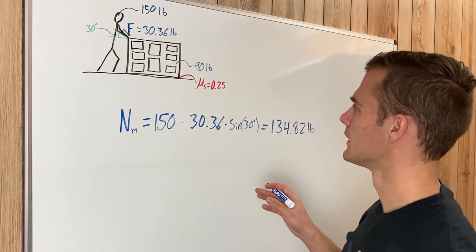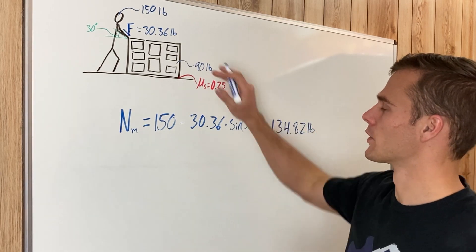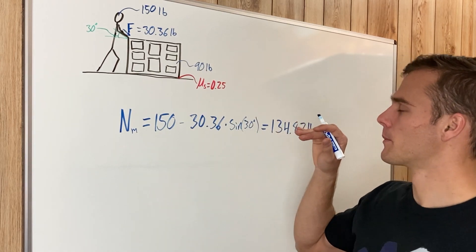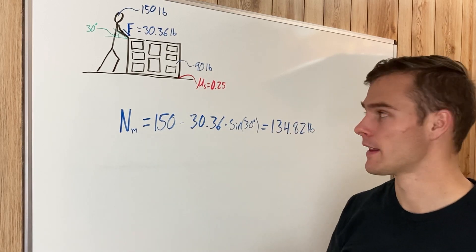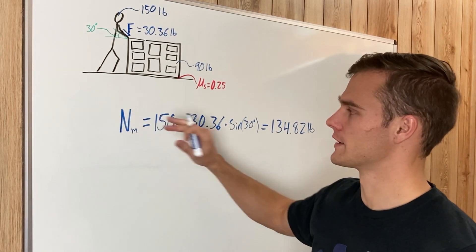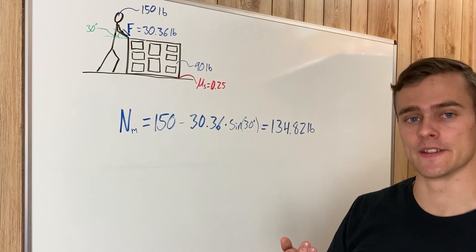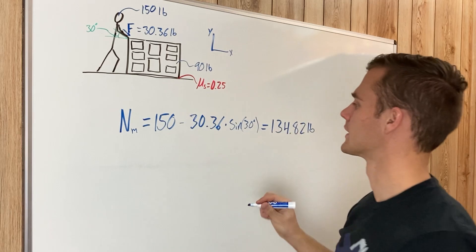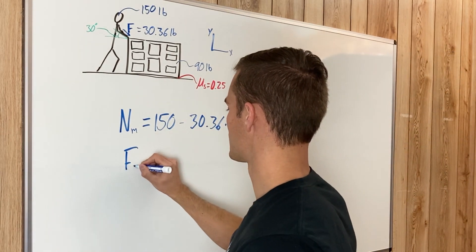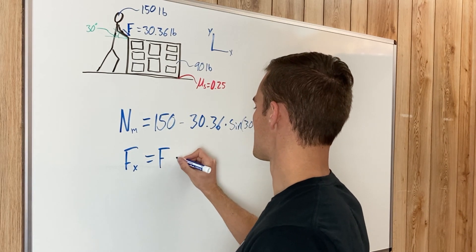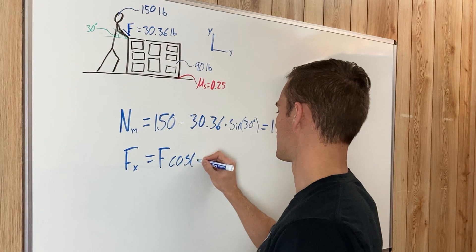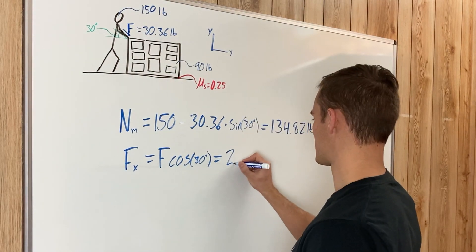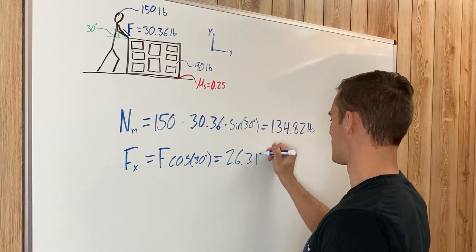Since the man is pushing with a force of 30.36 pounds, we find the component parallel to the ground — in the x-direction. The friction force on the man must balance this horizontal push. So F_x equals F times cosine of 30, which works out to 26.3 pounds.